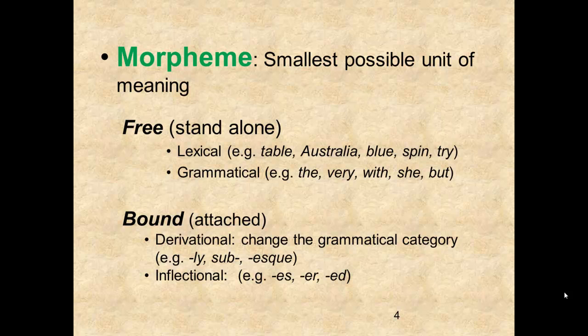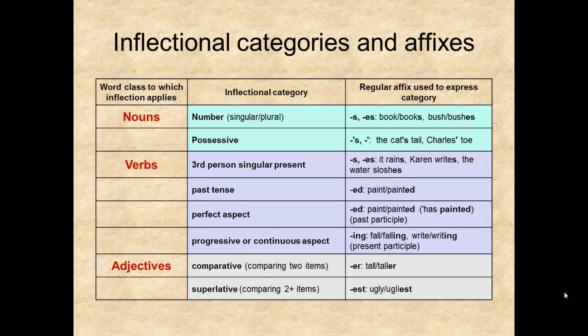Inflectional morphemes are those used in the grammar. Let's take a look at the inflectional affixes of English. This table gives all of the inflectional affixes of English in the third column. The first column is the word class to which the affix is added, and the second column tells you the purpose of the affix. Note that all inflectional affixes in English are suffixes. This contrasts with derivational affixes, which can be either prefixes or suffixes. The simplest way to determine whether a bound morpheme is derivational or inflectional is to look for it on this inflectional chart — if it's not here, it's derivational.